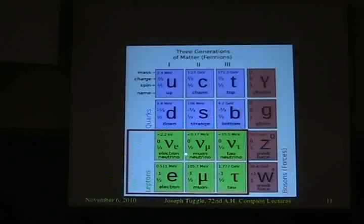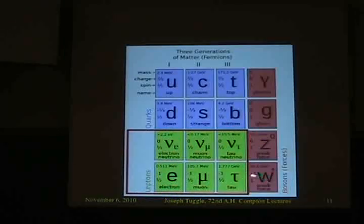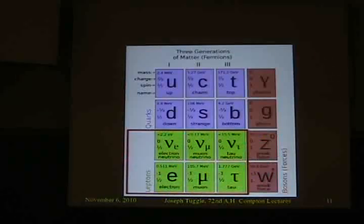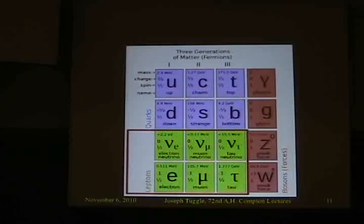Now let's talk about the leptons. The one you've heard me talk about mostly is the electron. Down here, these particles all have negative electric charge, while these — the neutrinos — have zero electric charge; they're neutral. There are a lot of similarities between how these interact, but the biggest difference is that the leptons don't experience the strong nuclear force. They only experience the weak nuclear and the electromagnetic force.